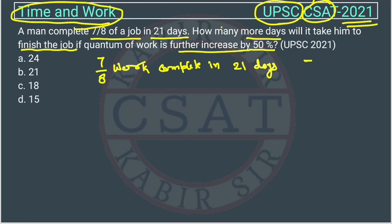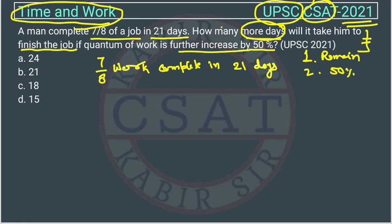In the CSAT paper, understanding the language of the question is very important. If you are able to decipher it, you can solve the question. The question is asking: first, how many more days will it take to finish the remaining work, since only 7/8 of the work is finished, and second, the work is increased by 50 percent.